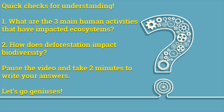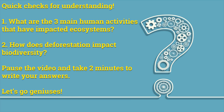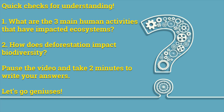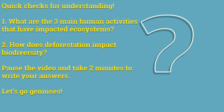Quick check for understanding. Number one: What are the three main human activities that have impacted ecosystems? Number two: How does deforestation impact biodiversity? Pause the video and take two minutes to write your answers. Let's go, geniuses.